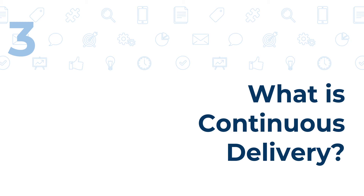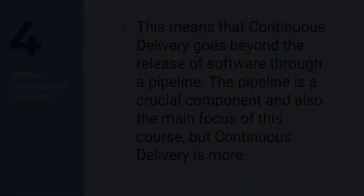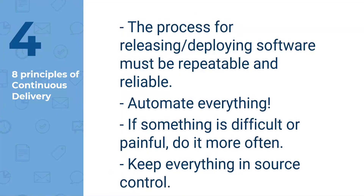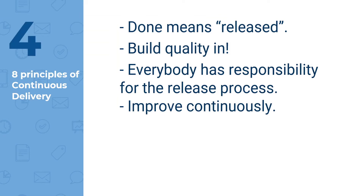To explain this a bit more, look at the Eight Principles of Continuous Delivery. The process for releasing and deploying software must be repeatable and reliable. Automate everything. If something is difficult or painful, do it more often. Keep everything in source control. Done means release. Build quality in. Everybody has responsibility for the release process. Improve continuously.